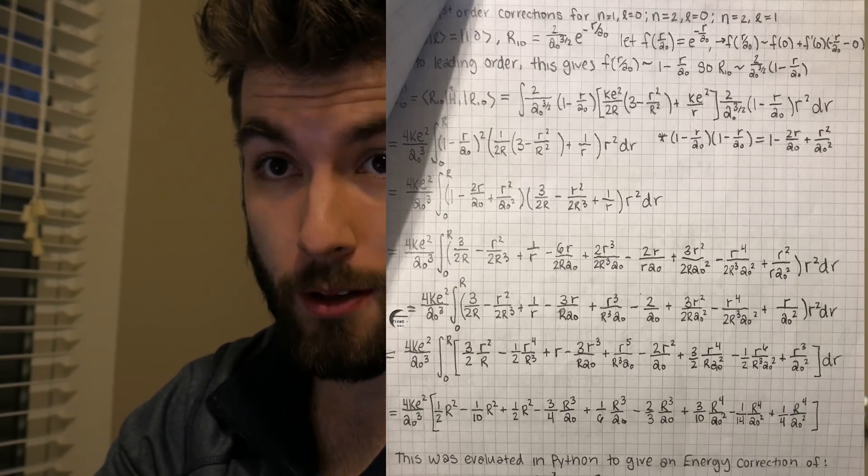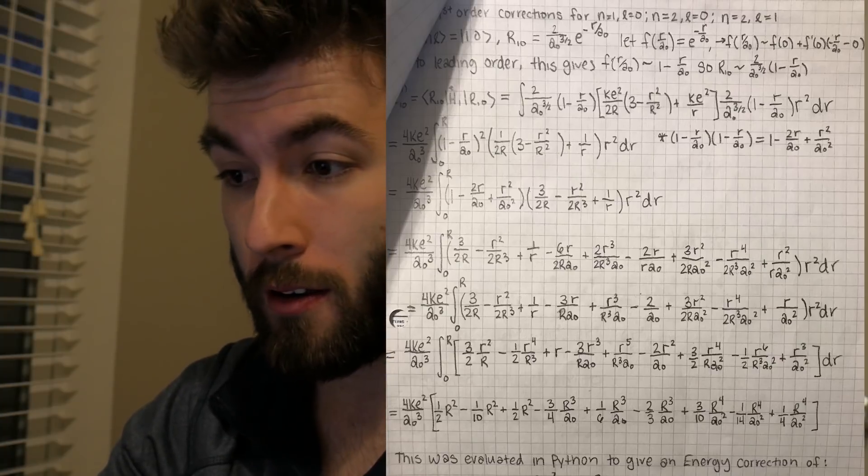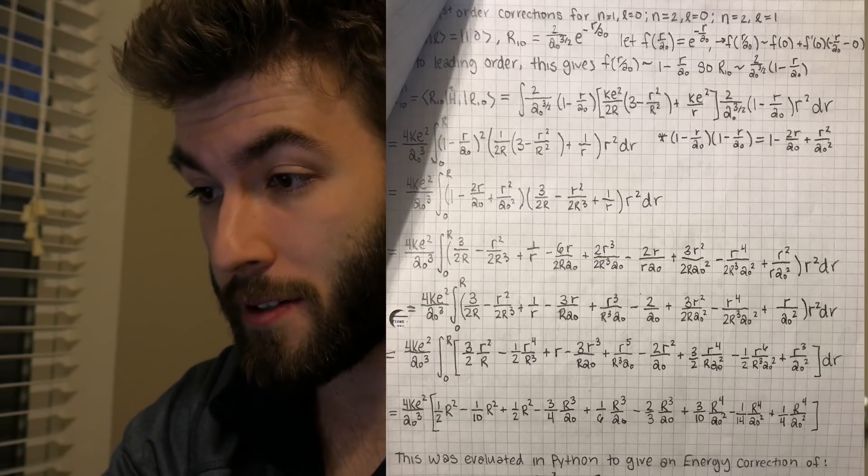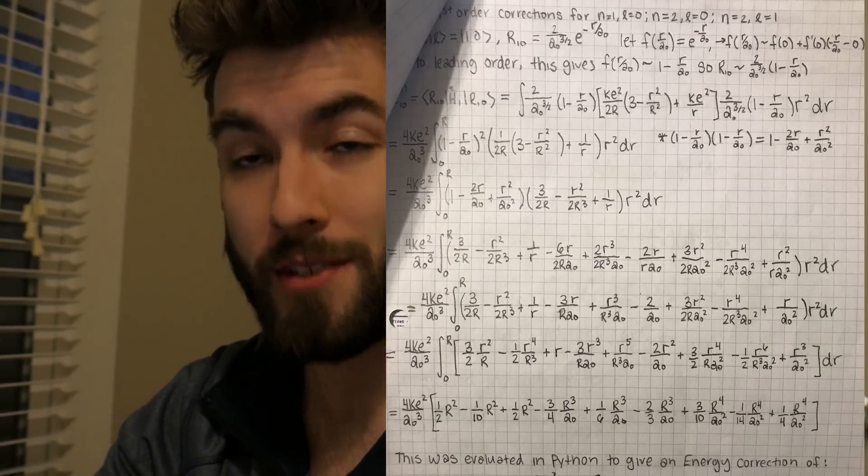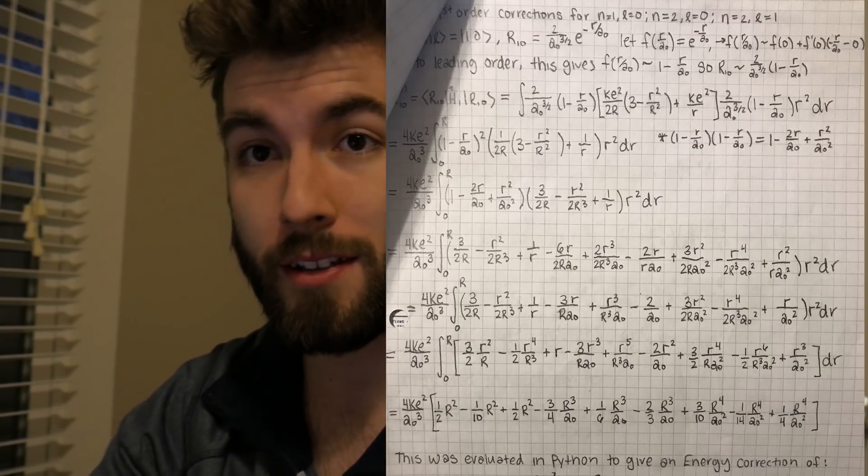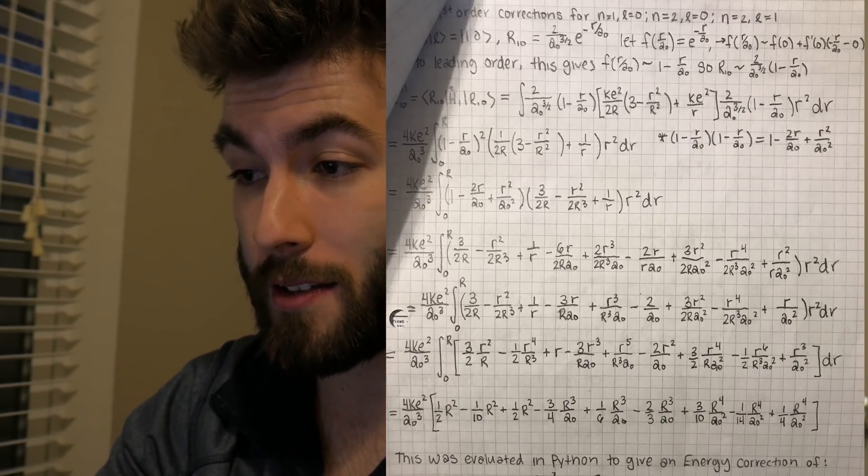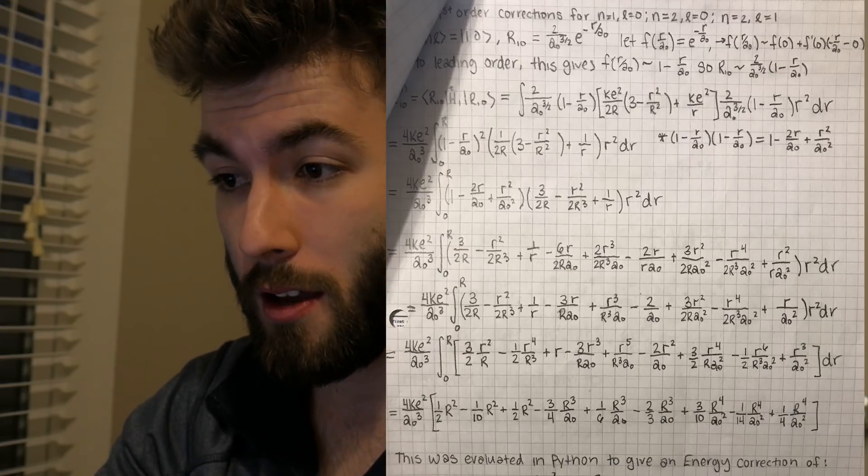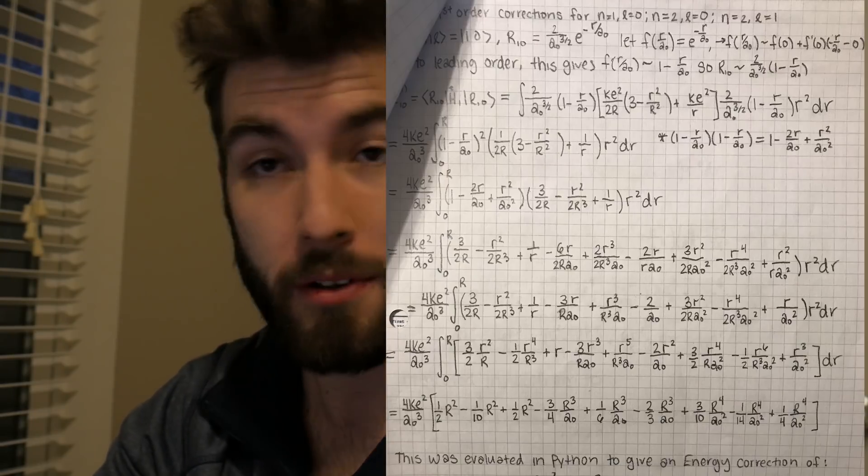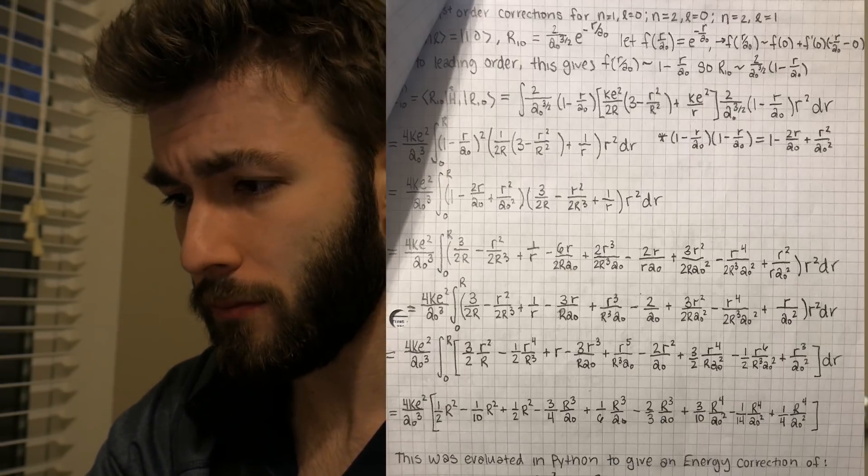Keep in mind that the perturbing Hamiltonian also has factors of R for the different wave functions, which just increases the number of times that you'd have to use integration by parts. So the fact that we could approximate this whole thing as polynomials makes it so that all we have to do is a bunch of power rules. And that's what I did. And that's why you see all of these terms here.